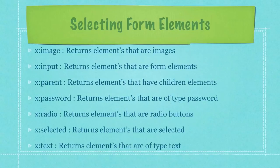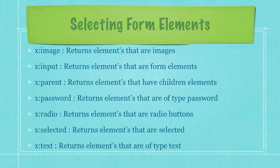The first here returns elements that are images. The next returns elements that are form elements. The third returns elements that have children elements. The fourth returns elements that are of type password. The fifth returns elements that are radio buttons. The sixth returns elements that are selected. And finally, the last returns elements that are of type text.